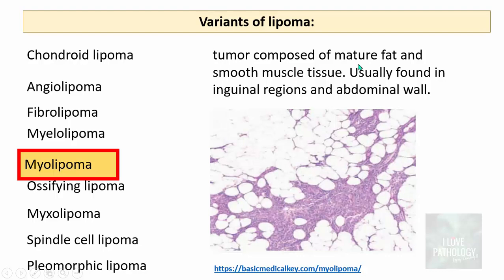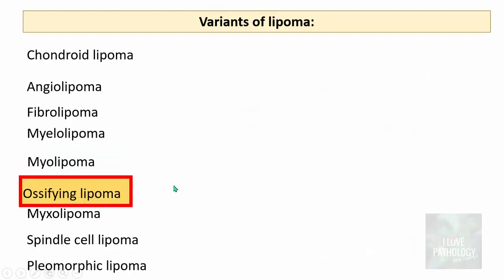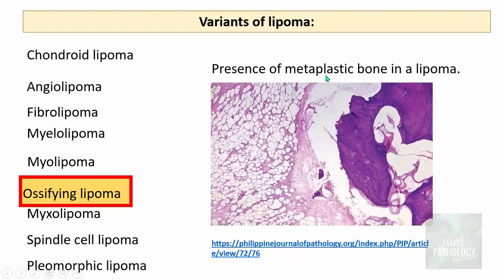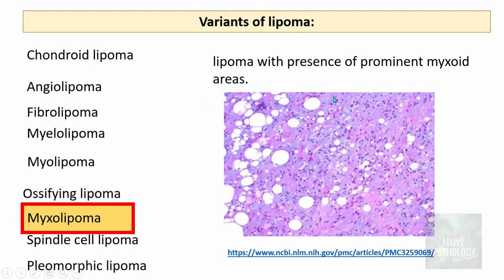Myolipoma is a tumor composed of mature fat and smooth muscle tissue — 'myo' meaning muscle, usually smooth muscle — and is typically found in inguinal regions and the abdominal wall. Ossifying lipoma contains metaplastic bone within the lipoma. Myxolipoma is a lipoma with prominent myxoid areas appearing as bluish regions on microscopy.